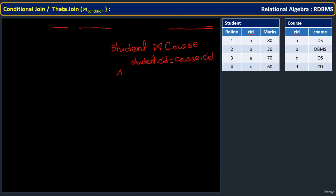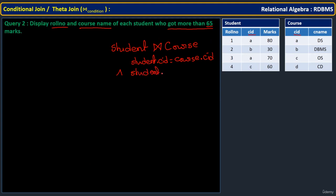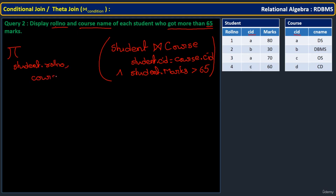The condition does not need to be always equal — here we use a greater-than operator: student.marks > 65. So two conditions are placed in the theta join. From the result we need roll number and course name: student.roll_number, course.c_name. This is the complete relational algebra expression for the second query.